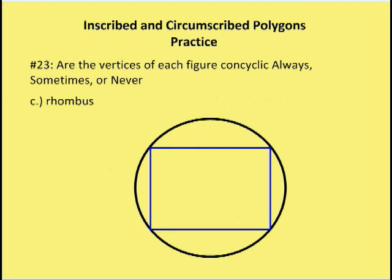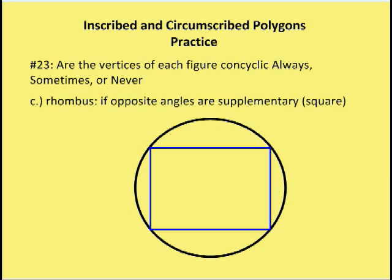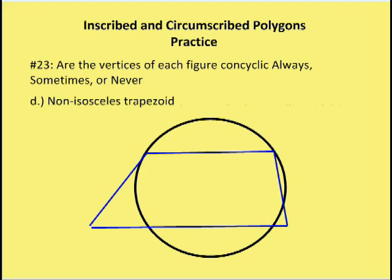A rhombus — the opposite angles of a rhombus are going to be supplementary only when the rhombus is a square, so the answer is sometimes. Next, an isosceles trapezoid — always, sometimes, or never? The answer is never if the trapezoid is not isosceles, because the opposite angles are not supplementary. If the trapezoid is isosceles, the opposite angles would be supplementary, but a non-isosceles trapezoid is never concyclic.